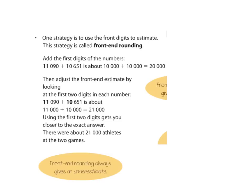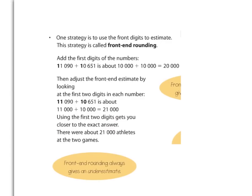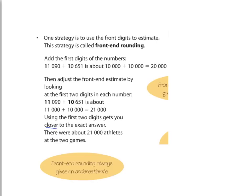That gives us 20,000. We could also adjust by using the first two digits: 11,090 becomes 11,000, and 10,651 becomes 10,000, giving us 21,000. Using more of the front of the number — a larger set of digits — gets you closer to the exact answer. So if you want to be more specific, use more digits up front.